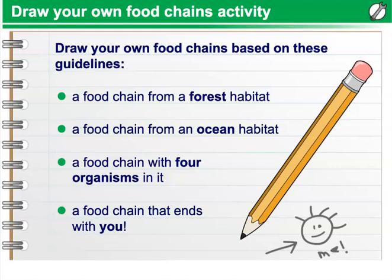Consider the following activity: draw your own food chains based on these guidelines. Have a food chain from a forest habitat, or a food chain from an ocean habitat. Make sure to include only four organisms in it. Then add yourself as the end of this particular food chain.